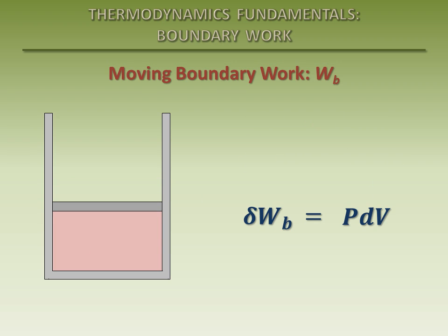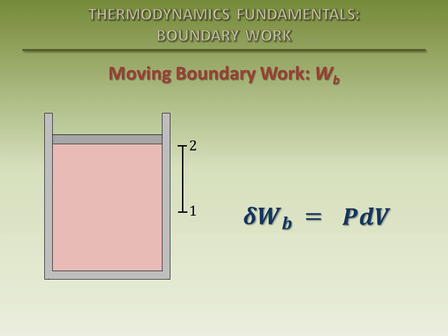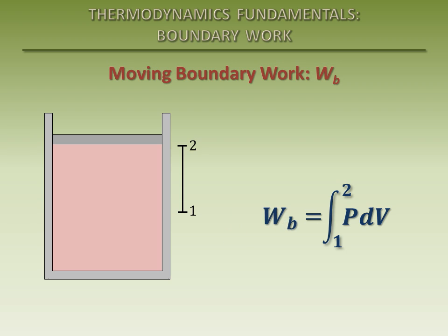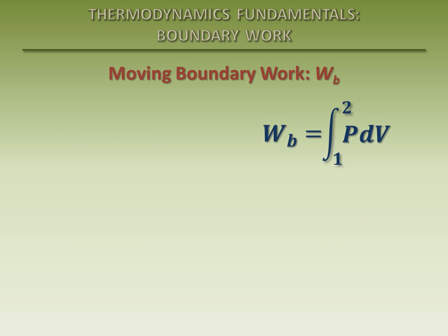The total boundary work done as the piston moves from point 1 to point 2 can be obtained by adding all of the differential work from state 1 to state 2. This is done by integration. Recall that work is a path function, so the integral of the differential boundary work done from point 1 to point 2 is simply equal to the total boundary work done during the process.